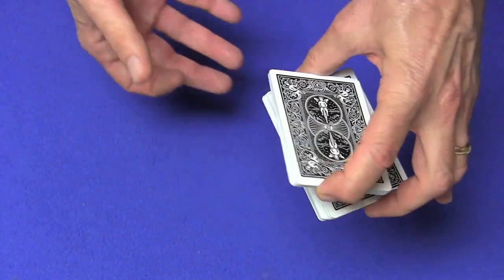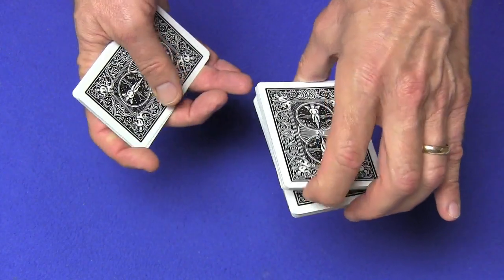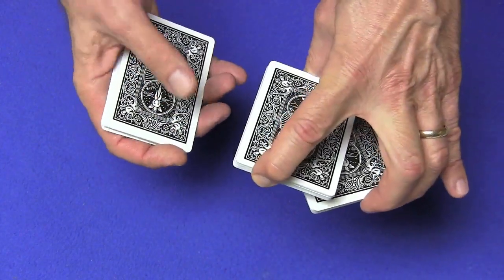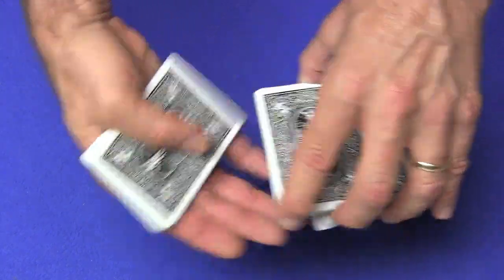One more time break a small packet, swing it over as far as you can, lock it in, break off another packet, swing it over as far as you can. Your ring finger is going to take this packet back, you're going to grab this packet.